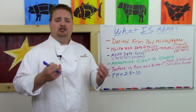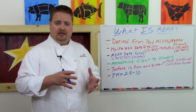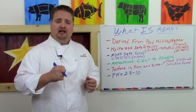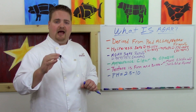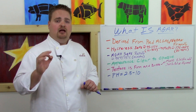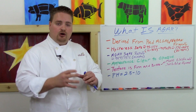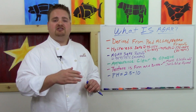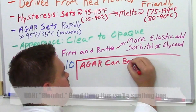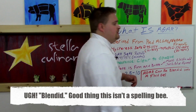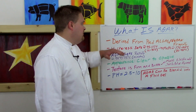Another cool thing about agar is it can create what's called a fluid gel. You take the agar once it's set, place it in a blender — sometimes using the auger to move it around — and you can actually blend a set agar gel into a thin puree. This thin puree then holds up on a plate almost like a fluid gel. That's another great reason to use agar.